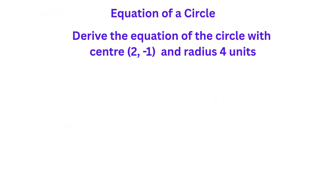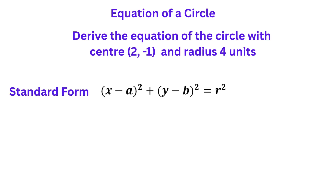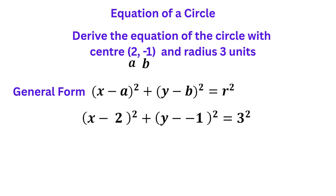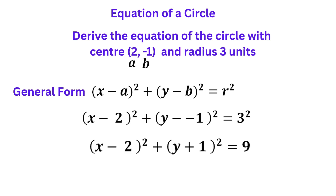In this example, we are given the centre and the radius and asked to find the equation of the circle. So A is 2 and B is minus 1. Substitute the values of A and B into the general form and we get (X minus 2) squared plus (Y minus negative 1) squared, equal to the radius 3 squared. The double negative gives us positive 1, and 3 squared is 9.